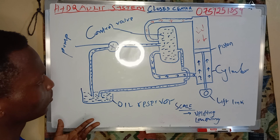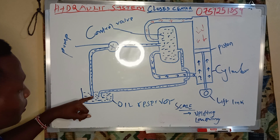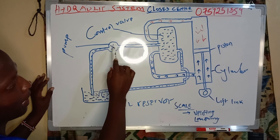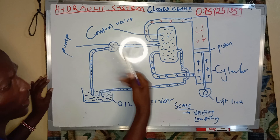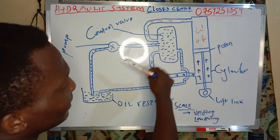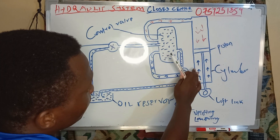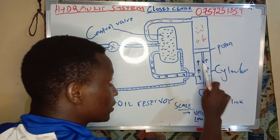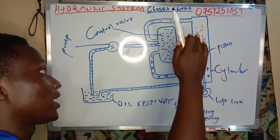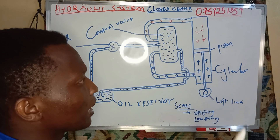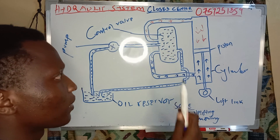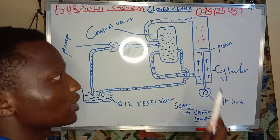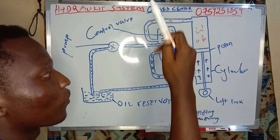Now, the oil from the reservoir is pumped by a pump under high pressure, such that the pressure will force the piston to make movement. The movement of the piston results in the lowering and the lifting. It will depend on which side of the piston is moving — is it downwards or is it upwards?